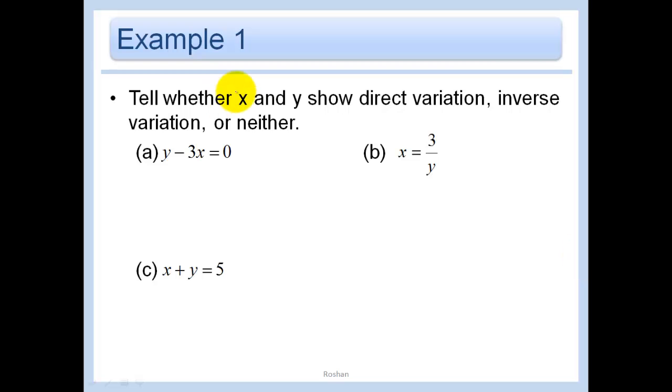Let's start off by just telling whether we have direct variation, inverse variation, or neither. Well, if we solve this for Y, we get Y equals 3X, which is just direct variation. Our constant of variation would be 3.